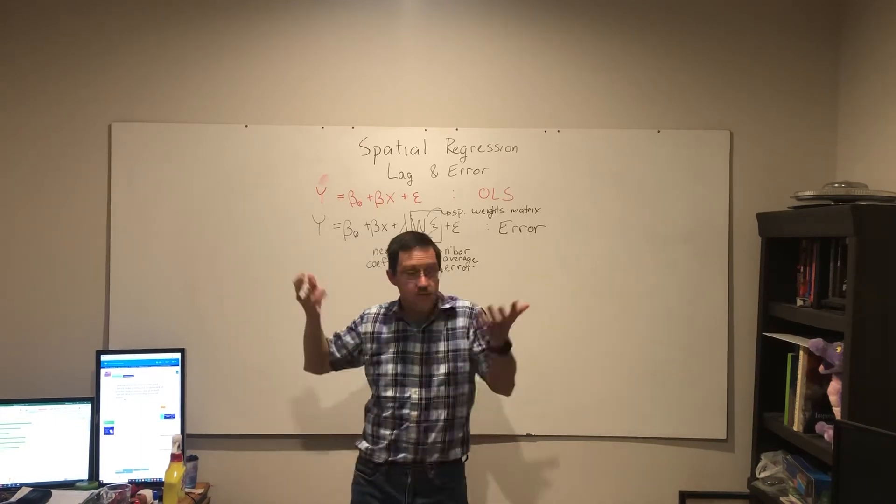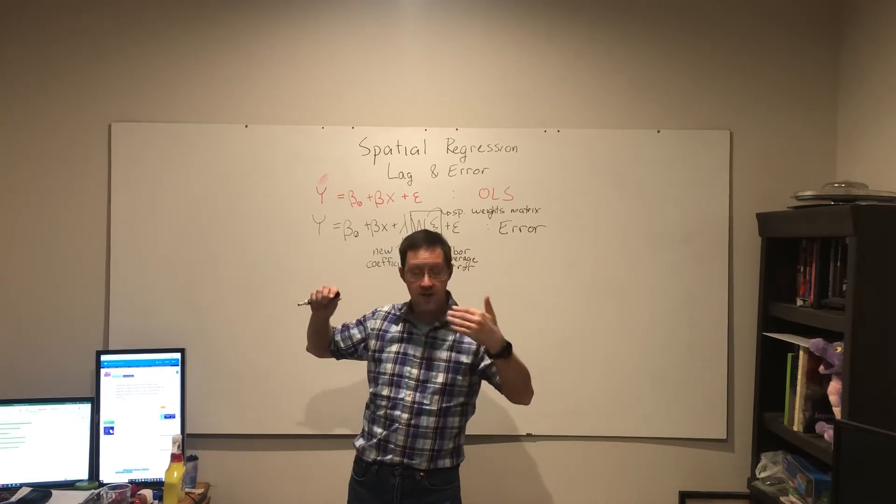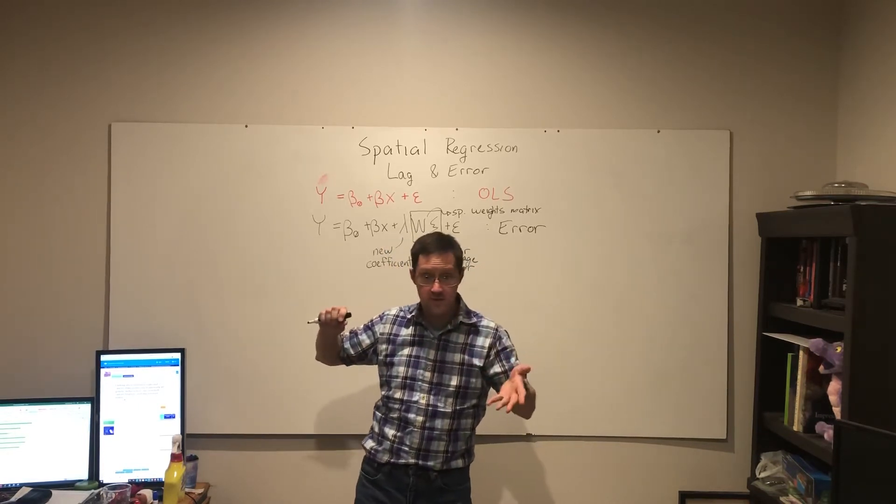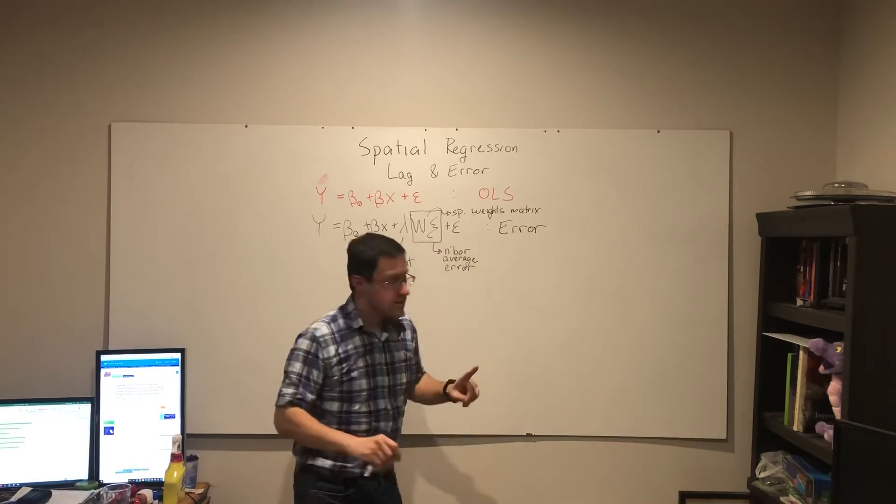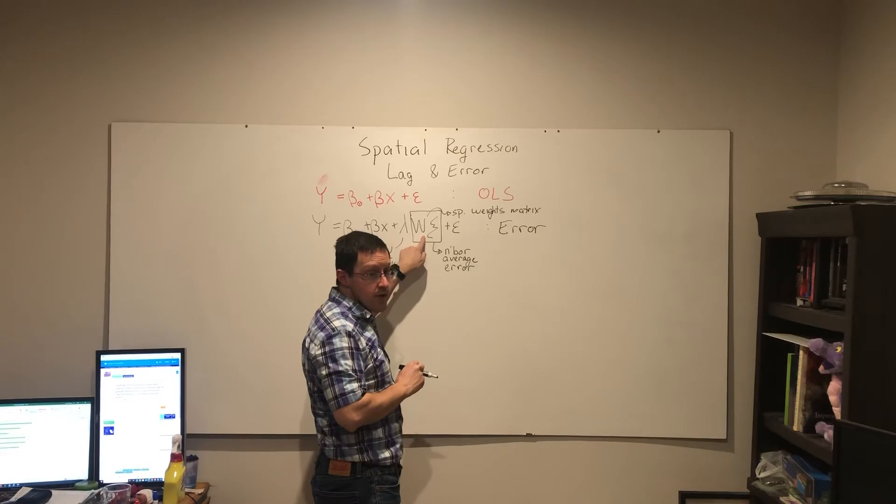And if they have a large average error, and a large positive average error, then this W squibble is going to be a large positive number.